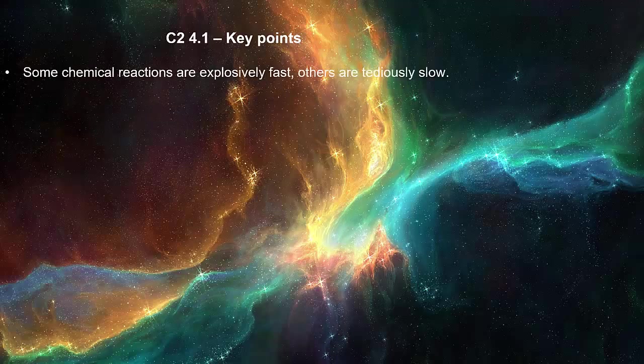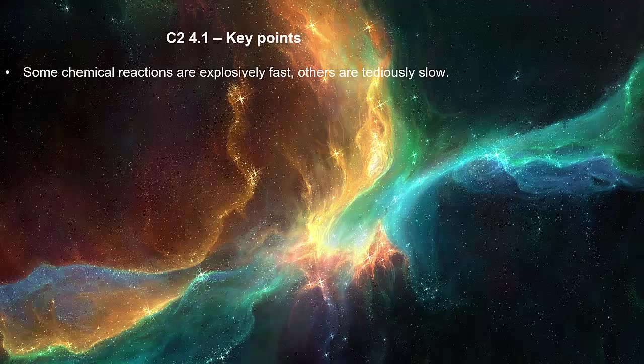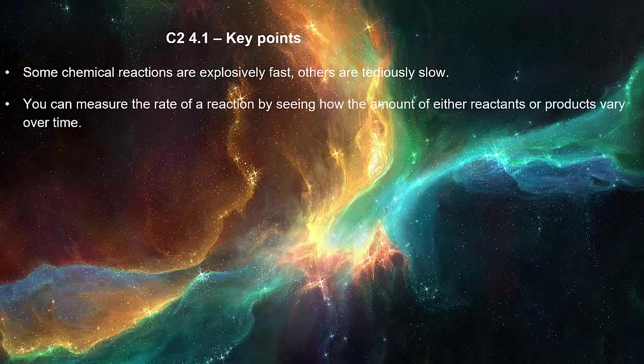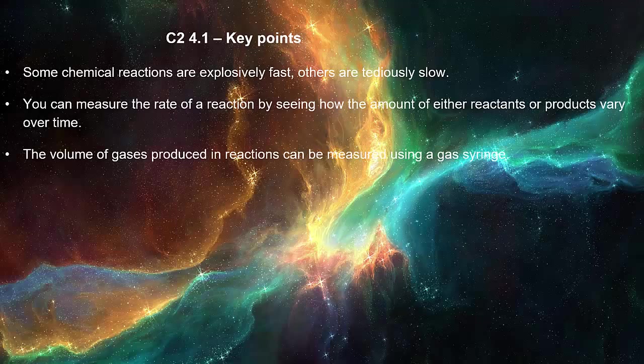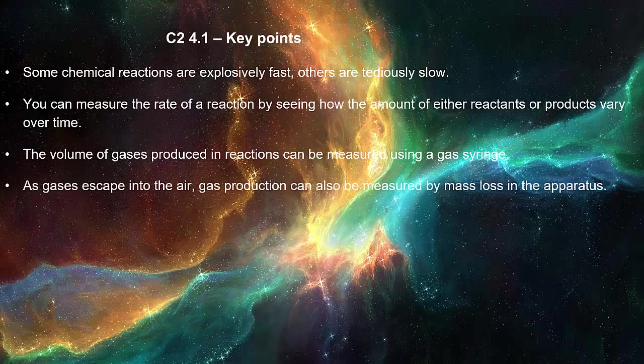Some chemical reactions are explosively fast, others are tediously slow. You can measure the rate of a reaction by seeing how the amount of either reactants or products vary over time. The volume of gases produced in reactions can be measured using a gas syringe. As gas escapes into the air, gas production can also be measured by mass loss in the apparatus.